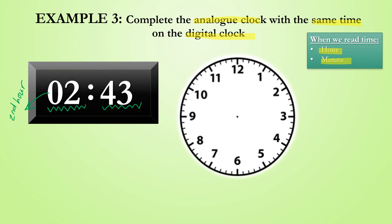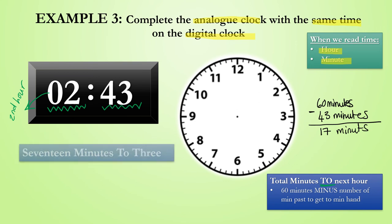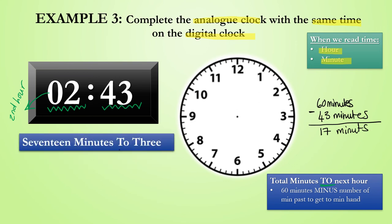So since we have passed half past, we need to calculate how many minutes are left to get to the next hour, which is 3 o'clock, and then correctly read the time. We would say 60 minutes minus 43 minutes, and this is equal to 17 minutes. It is therefore 17 minutes to 3.